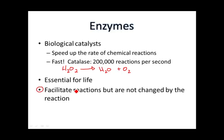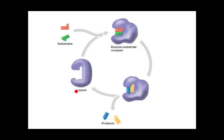Here is a diagram showing important information about enzymes. This is the enzyme, and it has an important site called the active site. For an enzyme, the active site is where all the action takes place — that's where the substrate or substrates are going to bind and where the chemical reaction will actually be taking place.